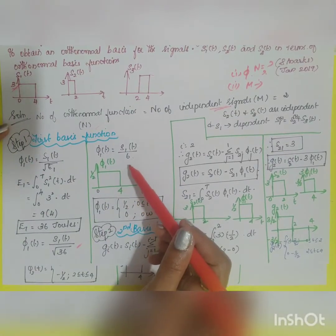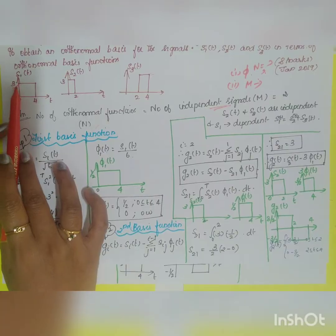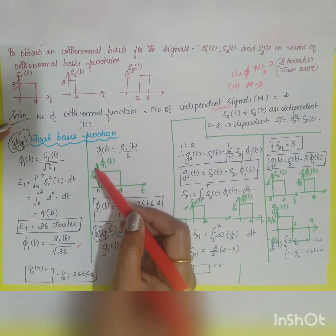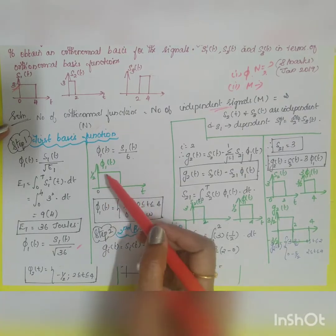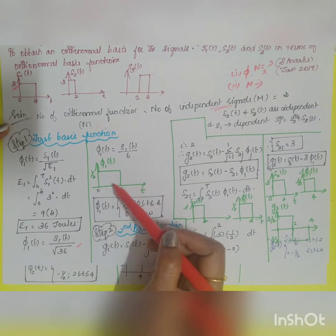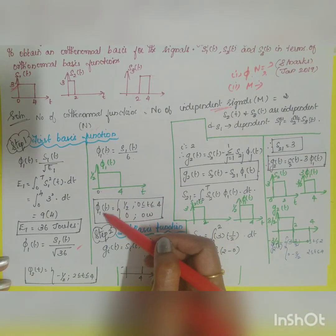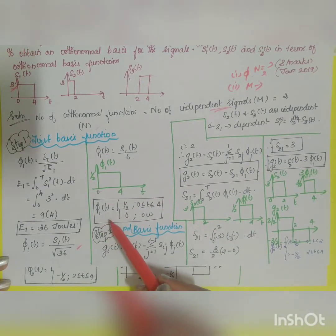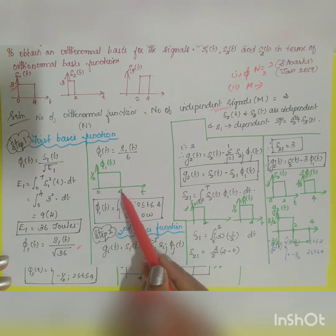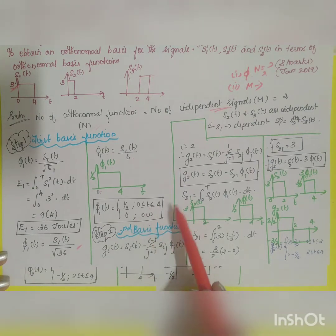Drawing the diagram: φ₁(t) = s1(t)/6, so 3/6 = 1/2. The amplitude becomes 1/2 and the time period remains 0 to 4. So φ₁(t) = 1/2 for 0 ≤ t ≤ 4, and 0 otherwise.